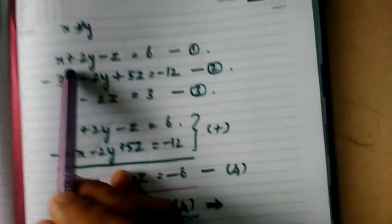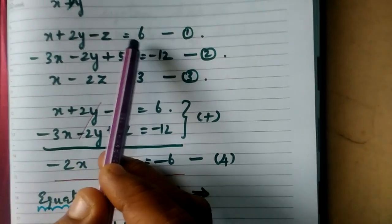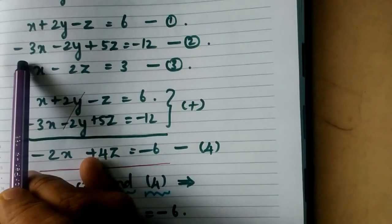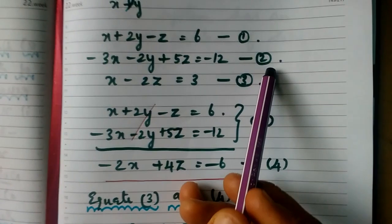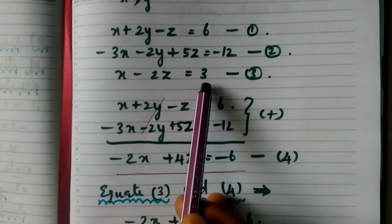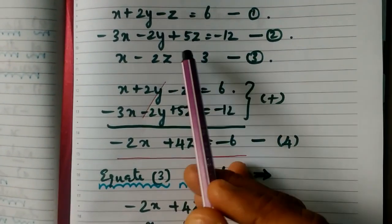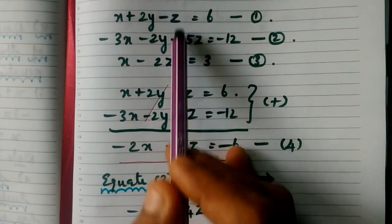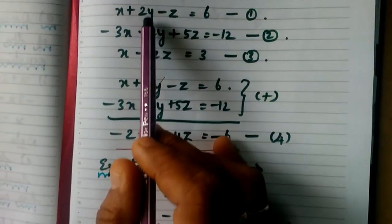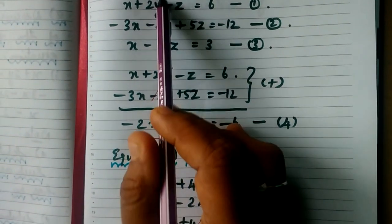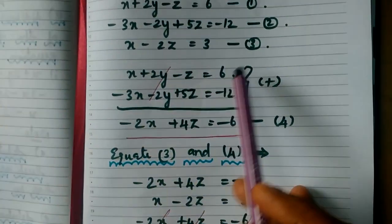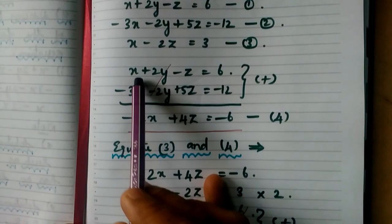Let us see. So the first equation is X plus 2Y minus Z equal to 6 as equation number 1, minus 3X minus 2Y plus 5Z equal to minus 12 as the second equation, X minus 2Z equal to 3 as equation number 3. Let us see the first equation. See, 1 and 2, if you are looking, the Y term is there? No. So these two Y terms directly we can eliminate. That is how you are going to add the two equations.